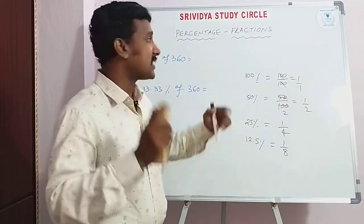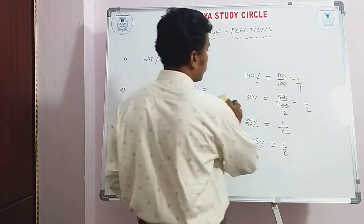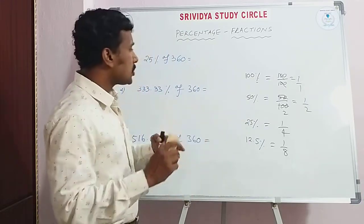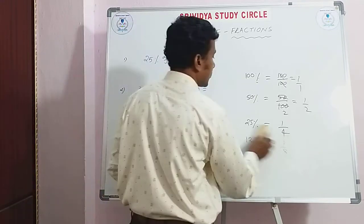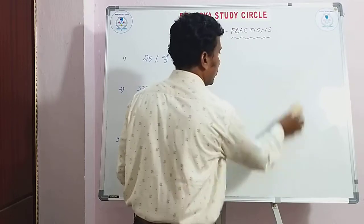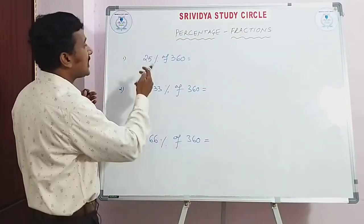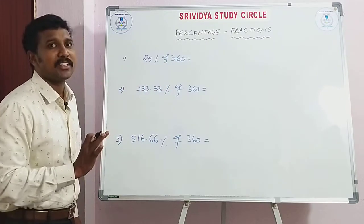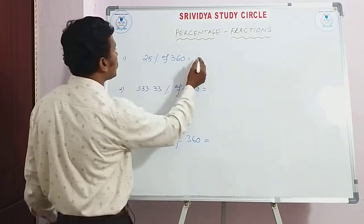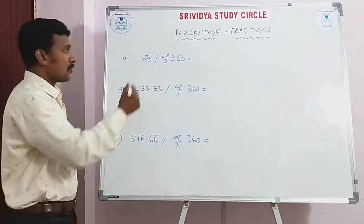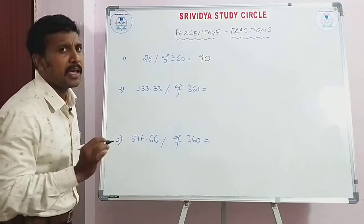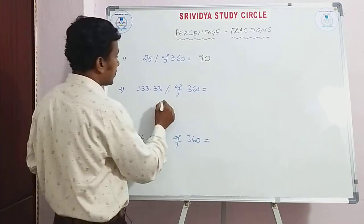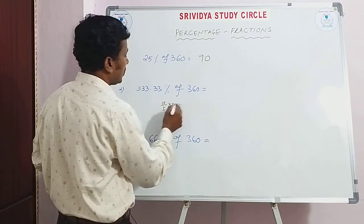First of all we should remember the basic knowledge; then we can use that to solve these types of questions. Now, what is 25% of 360? We should not do any calculation. The answer is directly: 360 divided by 4 equals 90. We write the answer directly.